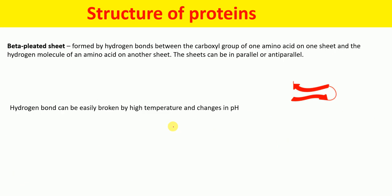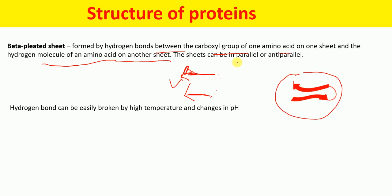What is the beta pleated sheet? This is another most common secondary structure. It is also formed by hydrogen bonds between the carboxyl group of one amino acid on one sheet and the hydrogen molecule of an amino acid on the other sheet. Beta pleated sheets can be parallel or anti-parallel. These beta pleated sheets are formed by hydrogen bonds between the carboxyl group of one amino acid and the amino group of the other amino acid, with the hydrogen bond formed between the oxygen atom and the hydrogen atom, resulting in the beta pleated sheet.